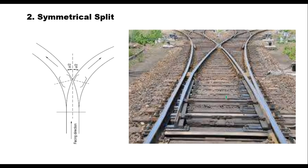The layout is symmetrical about the centre line, meaning the radii of the main track and the branching track are equal. It provides facilities for diverting vehicles both towards the left and the right. This arrangement is suitable for locations with space constraints as it occupies comparatively much less space than a turnout from a tangent track.